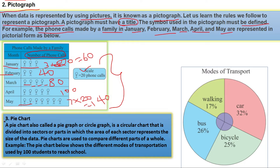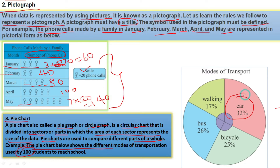Another type is the pie chart, also called a chapati chart or circle graph. We have a circular chart that is divided into sectors or parts, where the area of each sector represents a portion of the data. Pie charts are used to compare different parts of a whole. For example, a pie chart shows different modes of transport used by 100 students: 32% used car, 17% walked, 26% used bus, and 25% used bicycle.